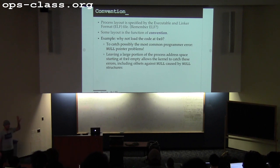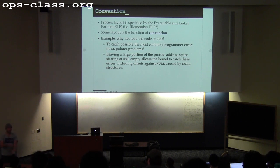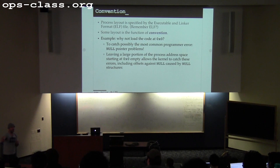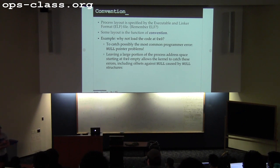We talked about why we don't load the code at the very bottom of the address space. When I talk about the bottom of the address space, I'm talking about low numbers. 0x0 is the bottom of the address space in the view of memory provided to the process. The top for MIPS for assignment 2 and 3 is 0x7FF. In theory it could be as high as 0xFF, but usually there's a bit of memory up there reserved for the kernel.